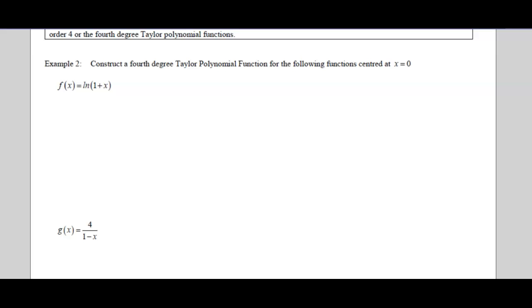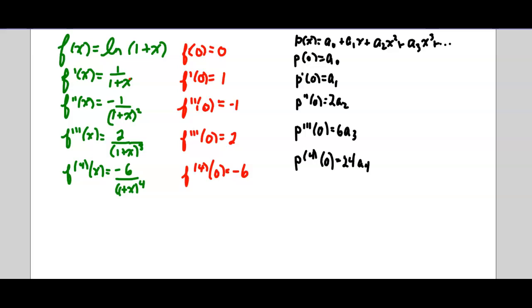We're going to approximate f(x) equals ln of 1 plus x with a degree 4 Taylor polynomial function. So I've started this work on a separate screen just to make it a little bit easier. You can see there's your f(x) on the left in green and I've taken the first four derivatives of that function.